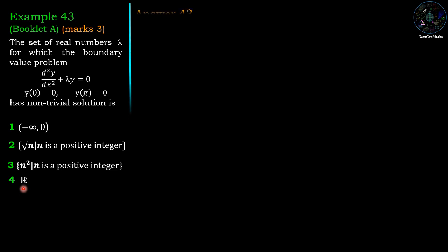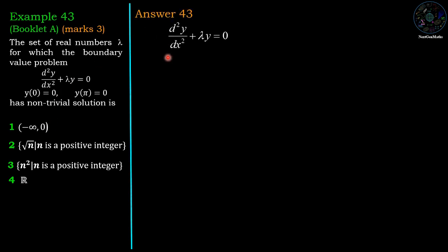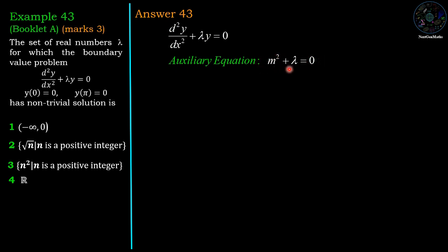First we are going to find the solution of the ODE d²y/dx² + λy = 0. The corresponding auxiliary equation is m² + λ = 0. The roots of the auxiliary equation depend on the value of lambda.